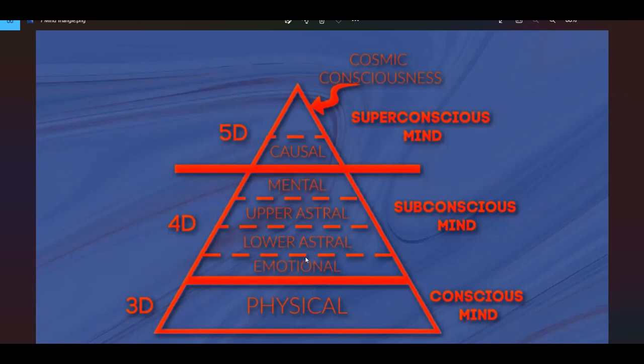The emotions are right next to the physical. So that's the closest level of mind that you can experience. That's why we feel emotions, that's why we call them feelings, because we can feel them. Our thoughts are a little less perceptible. They're a little further away. That's why it's harder to perceive them than it is feelings.